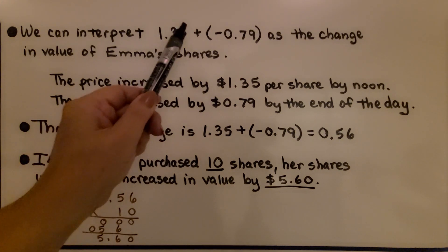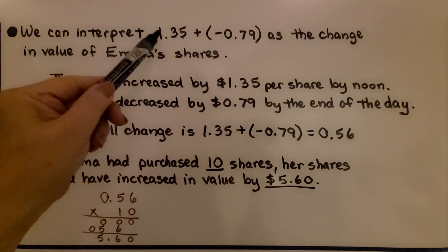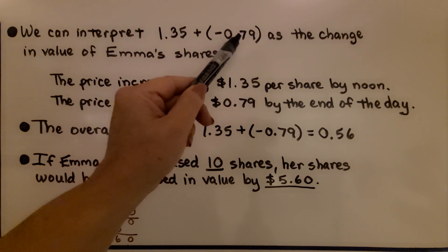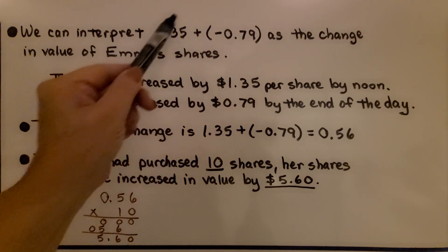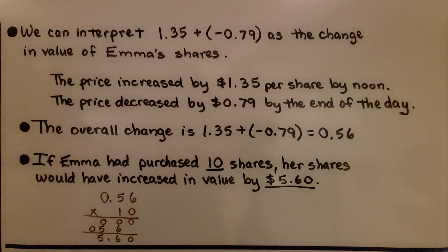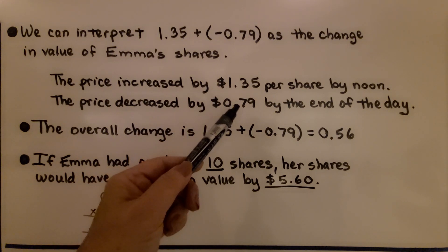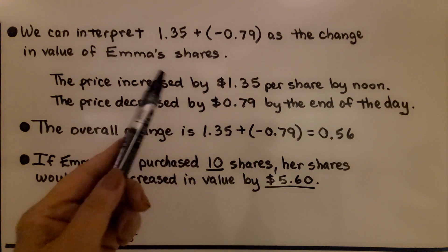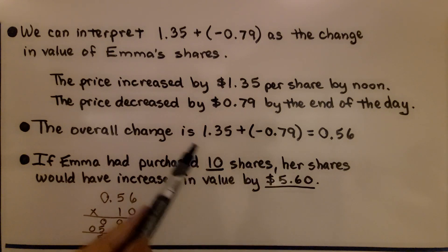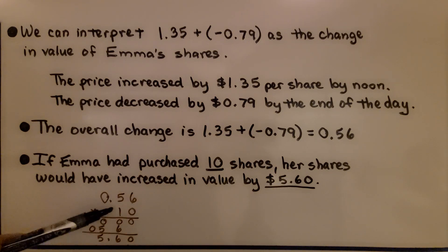We can interpret $1.35 plus the negative $0.79 as the change in value of Emma's shares. They went up by $1.35, but by the end of the day, they went back down $0.79. So, the true increase in its value would be the $1.35 plus the negative $0.79. The price increased by $1.35 per share by noon. It decreased by $0.79 by the end of the day. So, the true amount that it increased was $0.56. That's the overall change. If Emma had purchased 10 shares instead of her 6, her shares would have increased in value by $5.60. We would just multiply the $0.56 times the 10 shares.